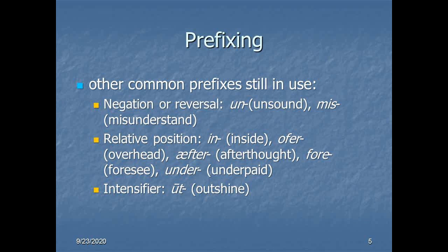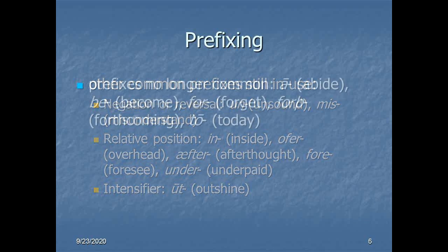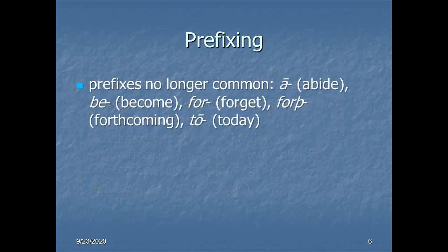And as an intensifier, we use out, from Old English, ut. So, the sun outshines the moon. If a person puts in a fantastic effort at something, we say they outdid themselves. That kind of thing. Other Old English prefixes are less common. So, a, as in abide. Be, as in become. For, without the e, as in forget. Or forth. You can be forthcoming. Or to, as in today. These still exist in words, but they're no longer actively in use. They're kind of fossilized. In Old English, they were much more common. They were much more active. And we really only have, as I said, fossil forms of them now. Things that have held on in everyday use, but are no longer productive.